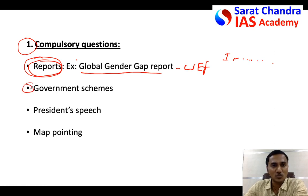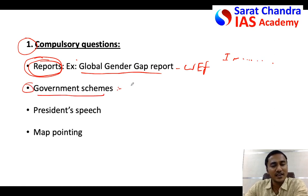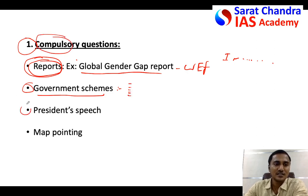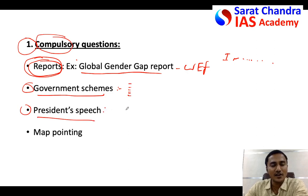The other compulsory question that comes every year — two to three questions — is on government schemes. My suggestion is that every institute in India has released the government schemes of the last one year. Quickly go through those government schemes because you will definitely get two to three questions from them.